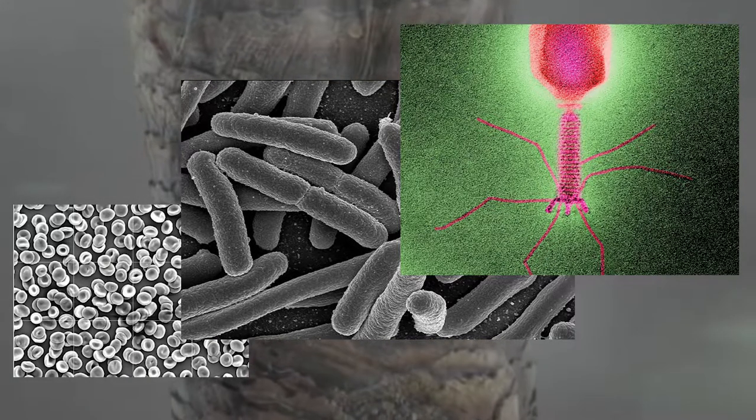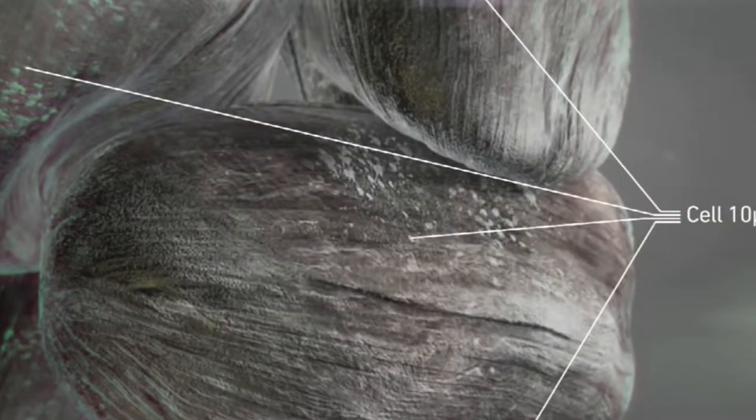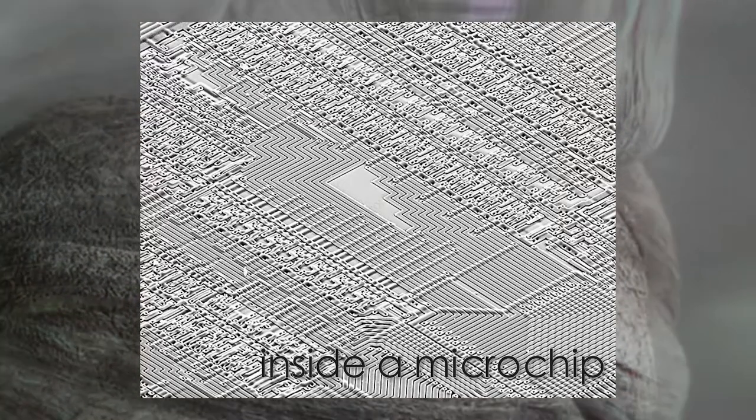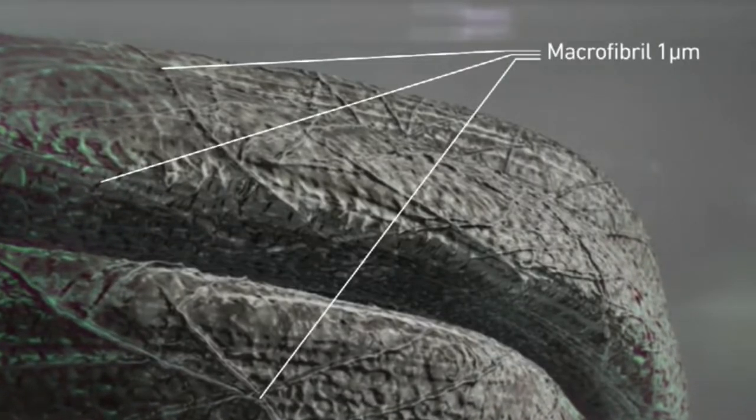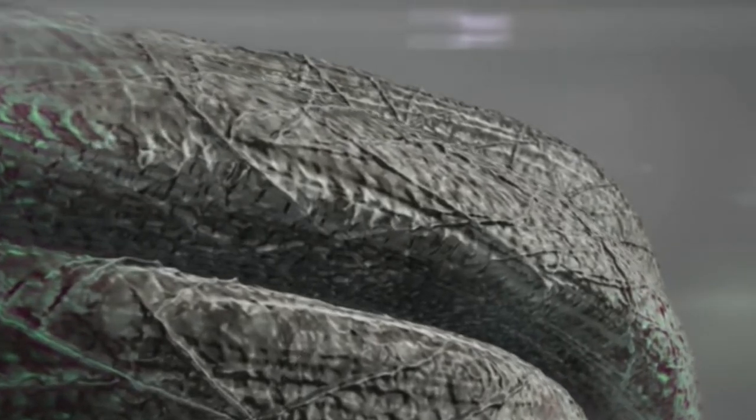In a material research lab, one may need to see the details of a material surface. In a solid-state physics lab, one may need to take a close look at a nanodevice. But how is this done in a lab? How do we observe tiny objects that we cannot see with our naked eye?